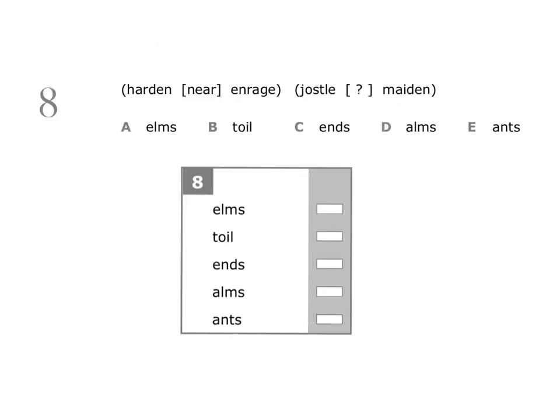Question eight: harden, near, enrage — jostle, missing word, maiden. The three words in the second group should go together in the same way as the three in the first group, and we need to find the missing word. The best way is to write the first word from the second group above the first word from the first group — jostle above harden — and write maiden above enrage.